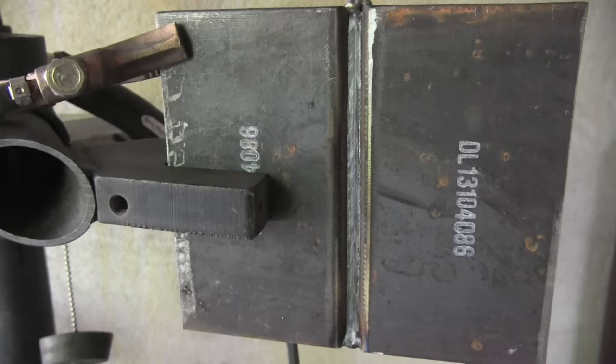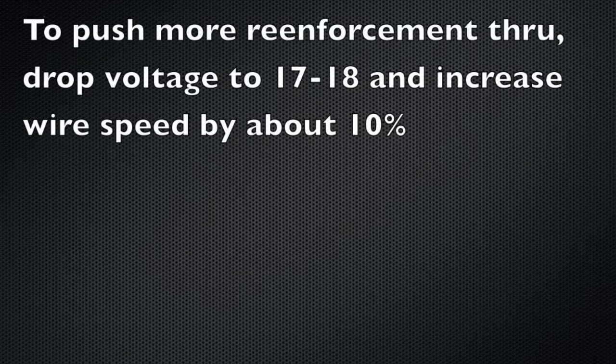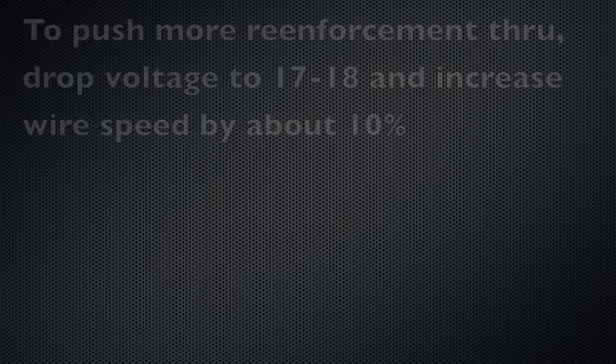Now the settings and the land and the gap and all that make a lot of difference here. Right here, I've got a pretty flush root, maybe in places it's actually concave. So I would need to tweak it a little bit and probably what I need to do is turn the voltage down a little bit and increase the wire feed speed just a little bit. And I can kind of change the profile and push a little bit more through the backside.